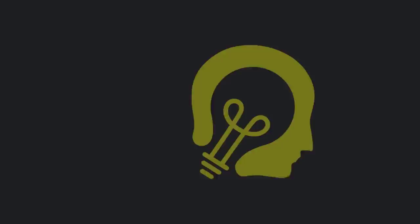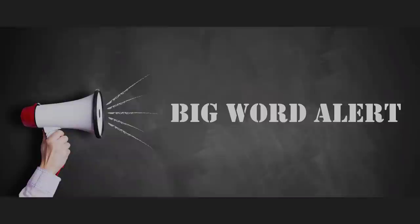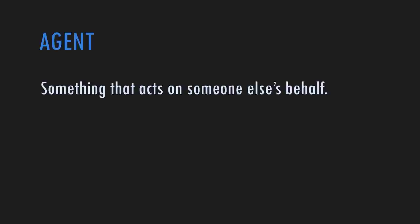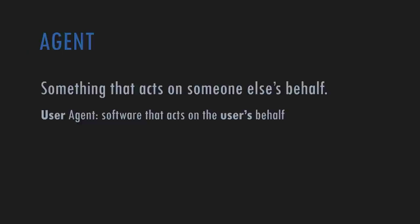User agents. Big Word Alert: an agent is something that acts on someone else's behalf. For example, an actor might have an agent that goes and looks for work for them - they act on their behalf. So a user agent is software that acts on the user's behalf. You ask user agents to do things for you probably every day - you're using one now.